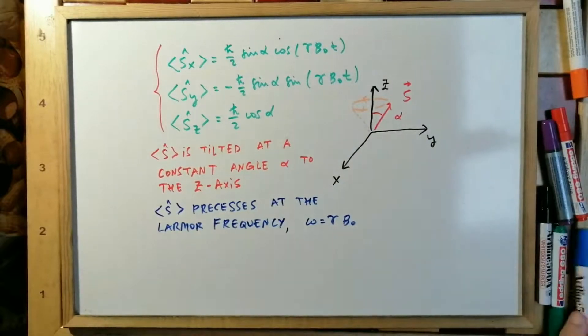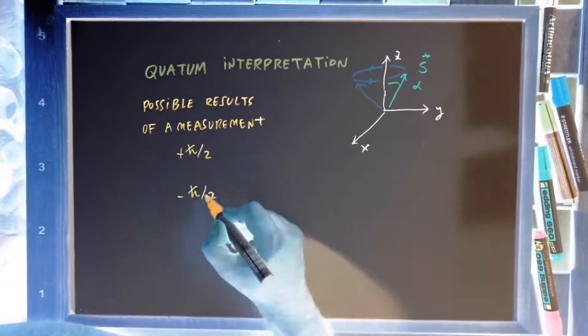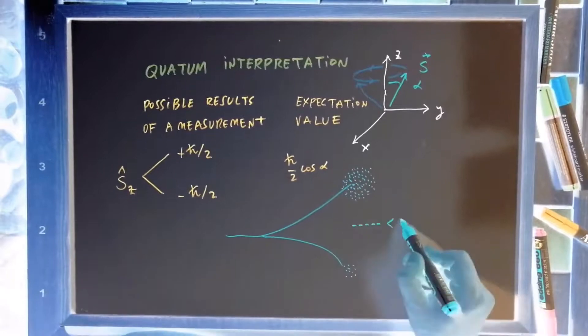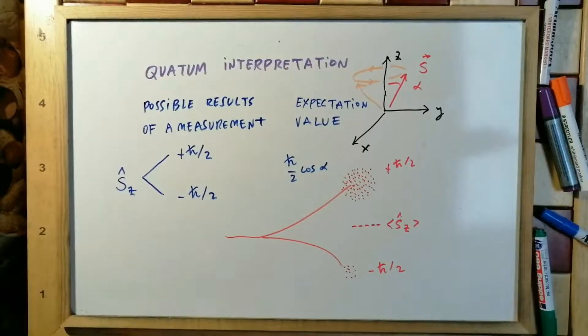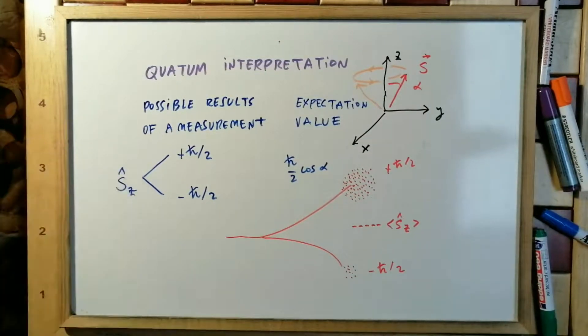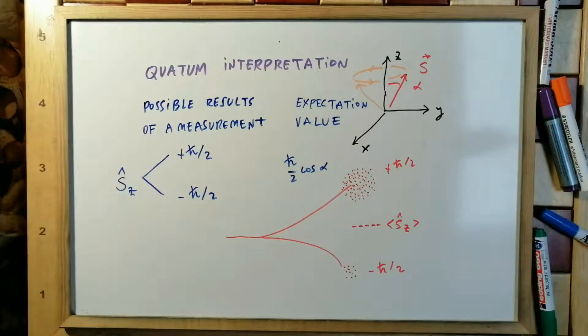Now let us see the quantum interpretation. Let us see a possible quantum interpretation of the precession. The possible results of a measurement are two possible results. But the expectation value can be between these both values.